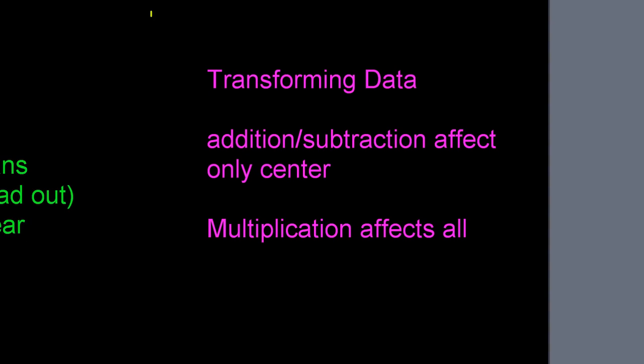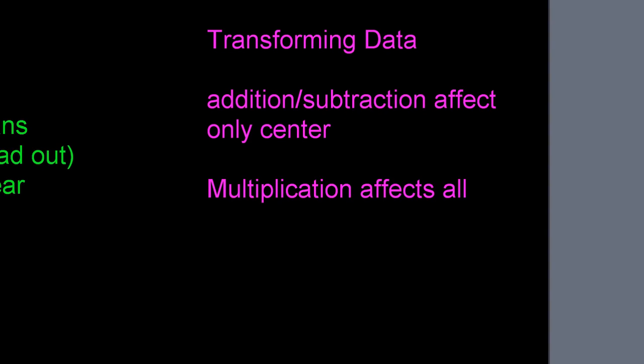The last topic is transforming data. If you add or subtract a constant from all data values, this only affects the center — the mean and median each shift by that constant. For example, adding 5 bonus points to everyone's test score shifts the mean and median up by 5, but the spread doesn't change — standard deviation, IQR, and range all stay the same.